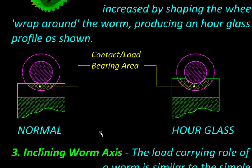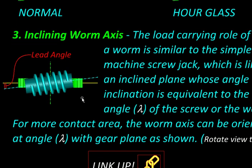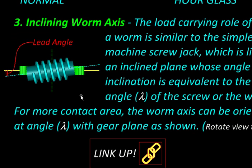Finally, here is the last variation where we have this worm inclined to the plane of the worm wheel. Let us see how the two are arranged in space.